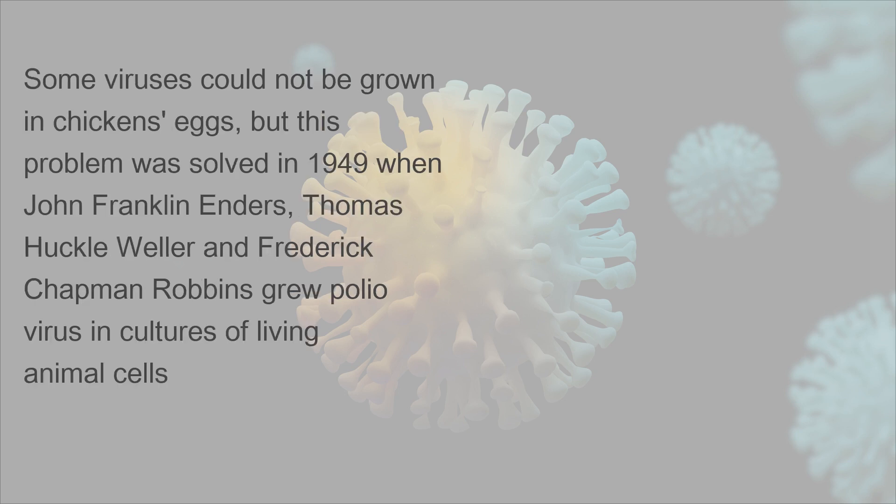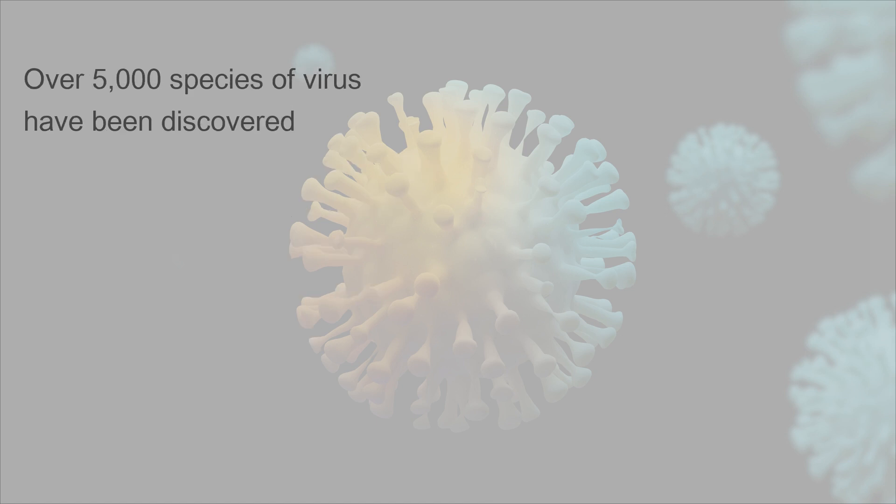Some viruses could not be grown in chickens' eggs, but this problem was solved in 1949 when John Franklin Enders, Thomas Huckle Weller, and Frederick Chapman Robbins grew poliovirus in cultures of living animal cells. Over 5,000 species of virus have been discovered.